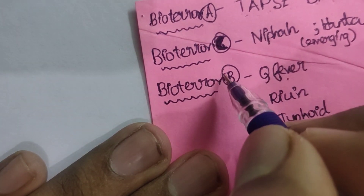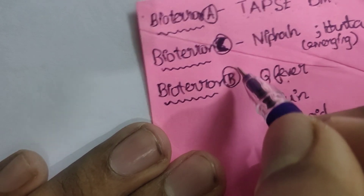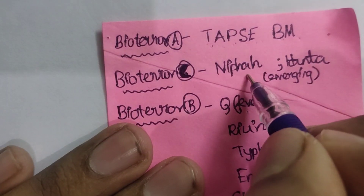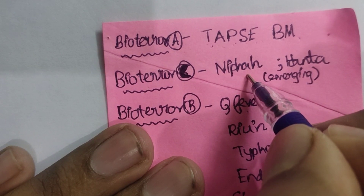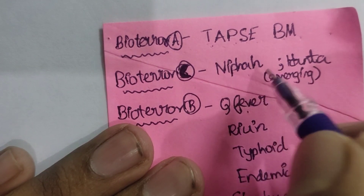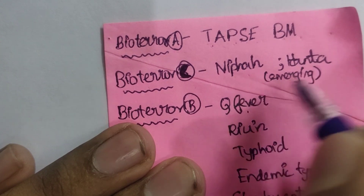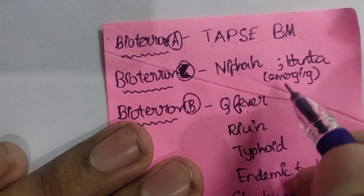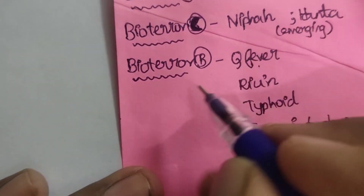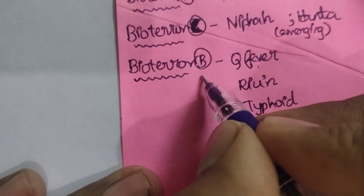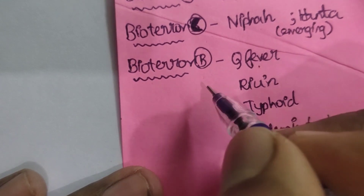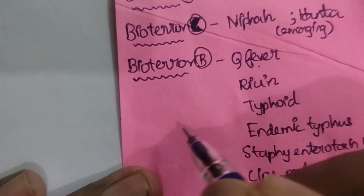In bioterrorism Category C, the agents which are easily spreadable and easily available are included. There are many agents, but the two most important are Nipah virus and Hantavirus. These two are emerging viruses.